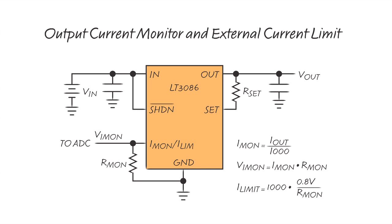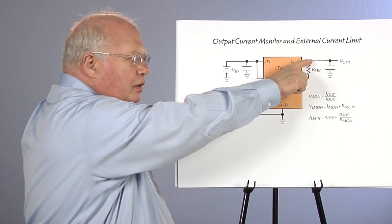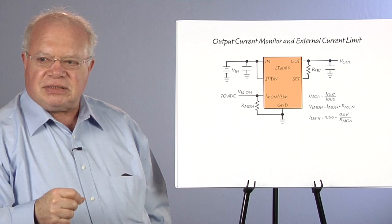The architecture of the LT3086 is different from most other regulators. It has a current source reference, and the current source through a single resistor sets the output voltage.